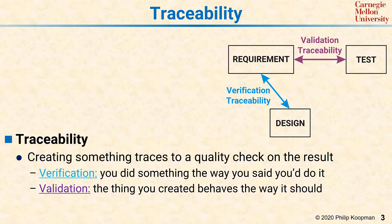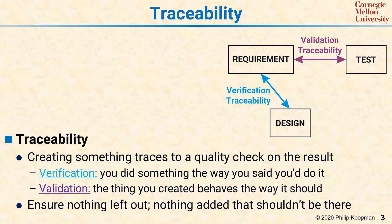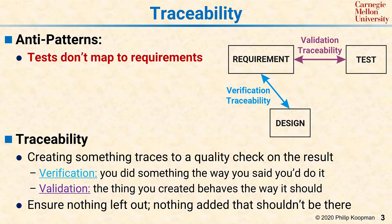The point of doing traceability is to ensure that nothing got left out and that nothing was added that shouldn't be there. The anti-patterns for traceability are: you have tests that don't map to requirements. If you have a test and there's no requirement, why are you doing that test? It might be because the requirement is missing, or it might be because you're testing something that isn't supposed to be there.